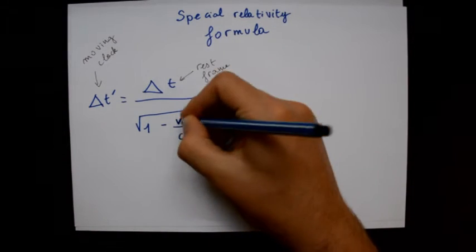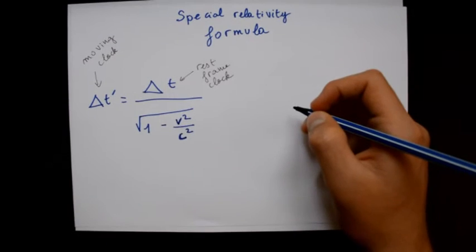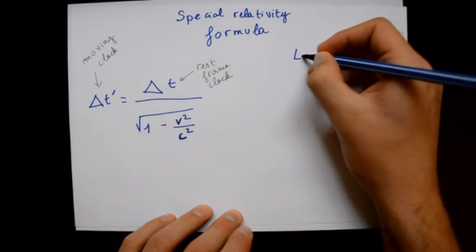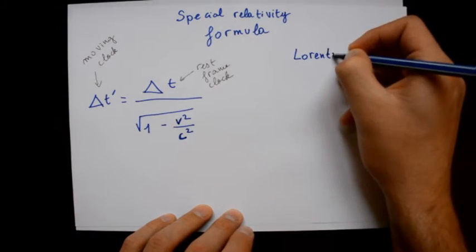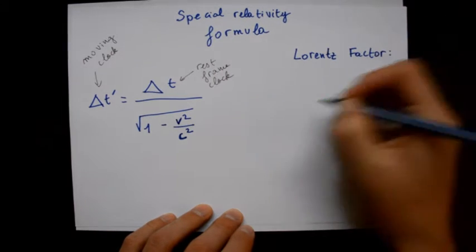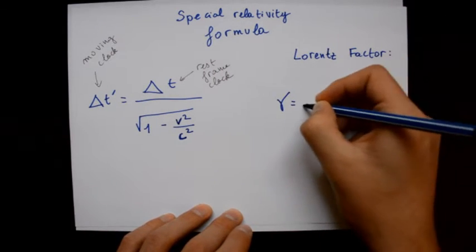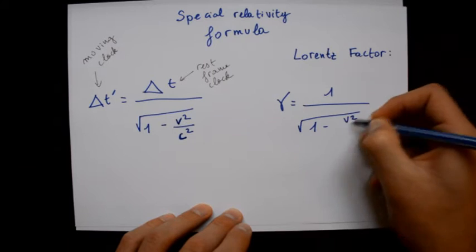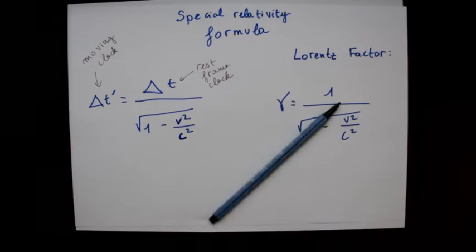We can also write this formula in another form with gamma. And this is called the Lorentz factor, after the physicist Hendrik Lorentz, which used this equation in relativity.